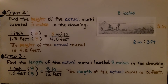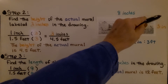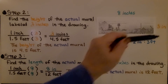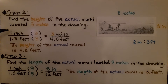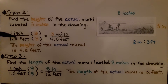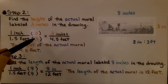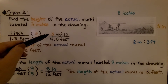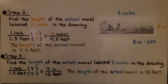For step two, we find the height of the actual mural, which is labeled 3 inches in the drawing. Using our unit rate of 1 inch to 1.5 feet, we multiply both values by 3. We get 3 inches to 4.5 feet, so the height of the actual mural is four and a half feet.